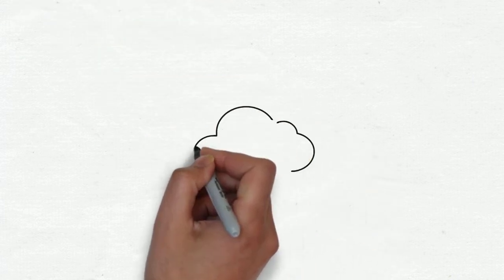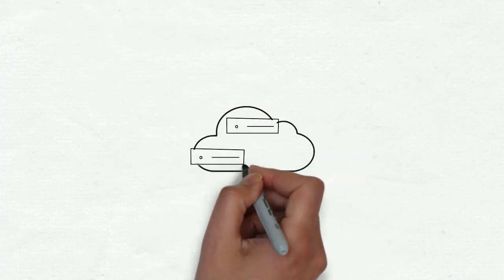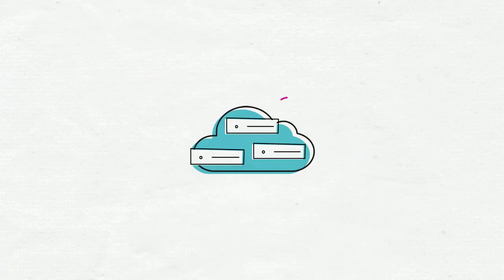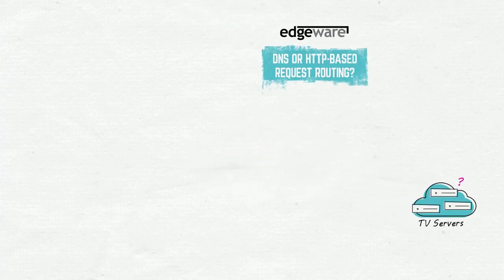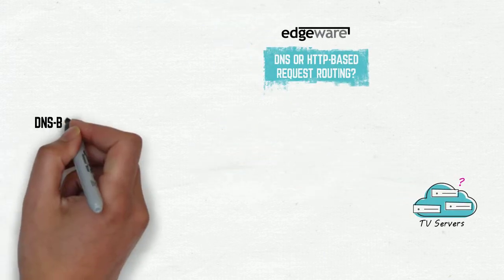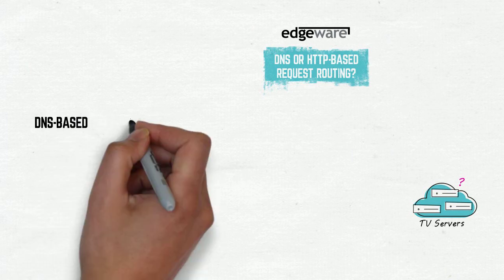A CDN needs to know which is the best server to deliver content to different users — a function called request routing. There are two ways of doing this: using DNS or HTTP.